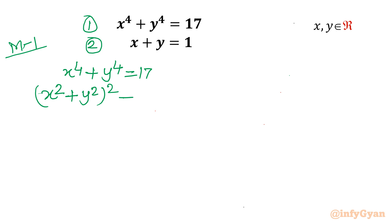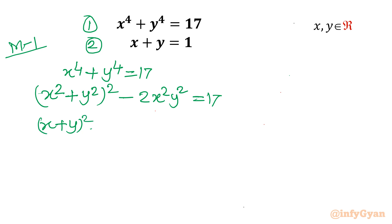The extra term is 2x²y², so I subtract it: (x² + y²)² − 2x²y² = 17. Now x² + y² can be written as (x + y)² − 2xy, so the expression becomes ((x + y)² − 2xy)² − 2x²y² = 17.